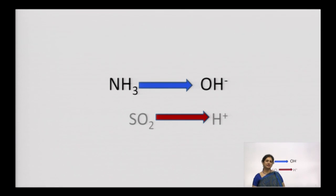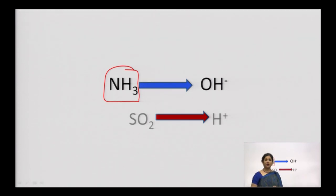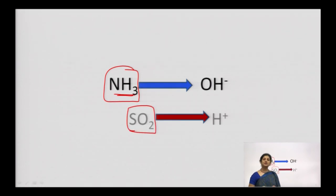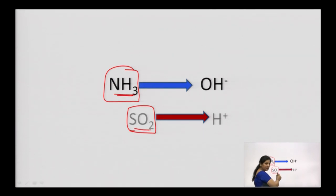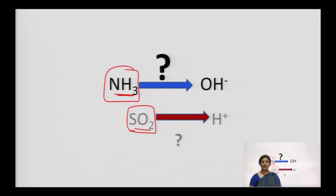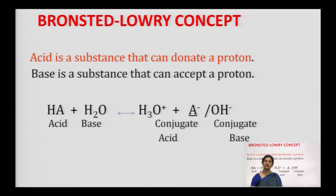Consider ammonia — does it have a proton ion to give, or a hydroxyl ion? It has no oxygen in its formula, yet it is a base. Likewise, sulfur dioxide is acidic in nature but we cannot see any proton in its formula. This means that as per Arrhenius theory, we cannot explain the acidic and basic behavior of these compounds. That is why another theory came about — the Bronsted-Lowry concept.